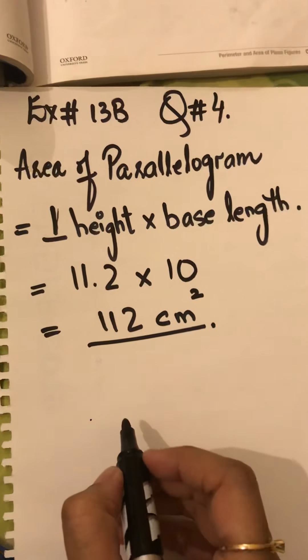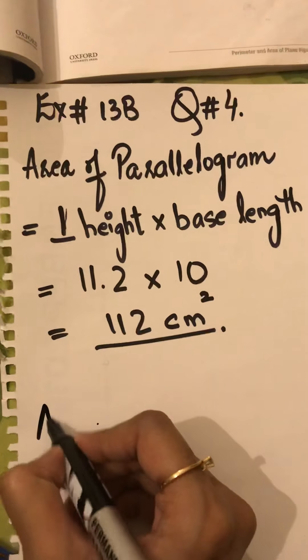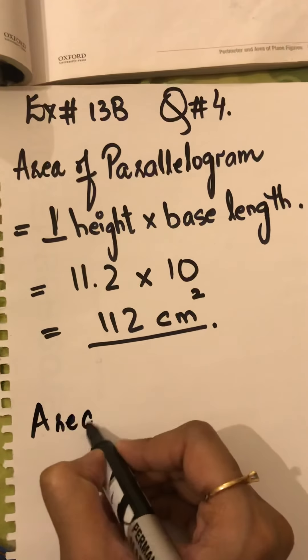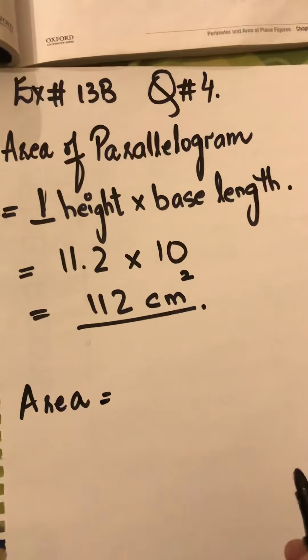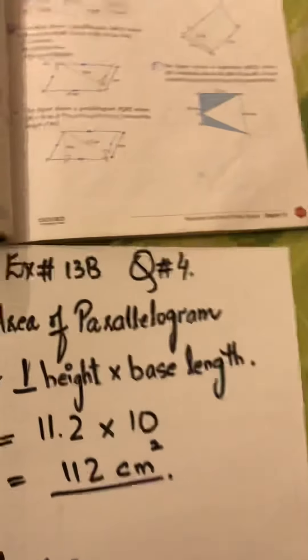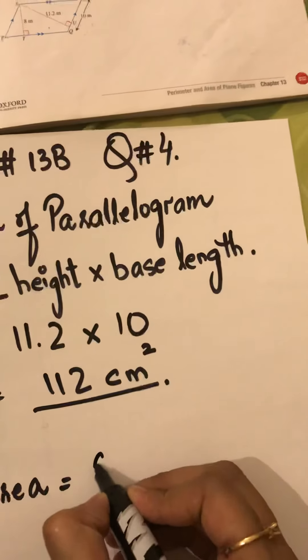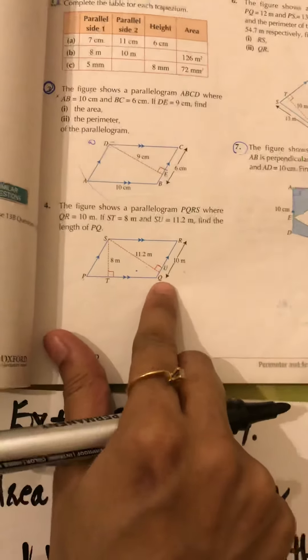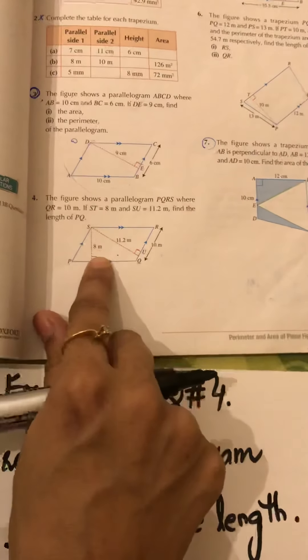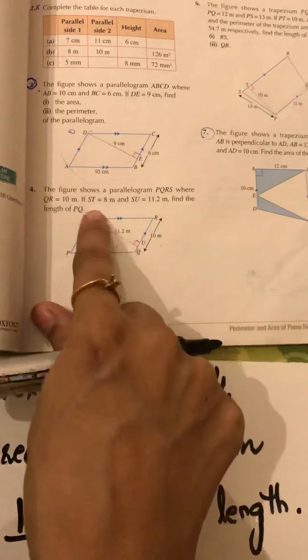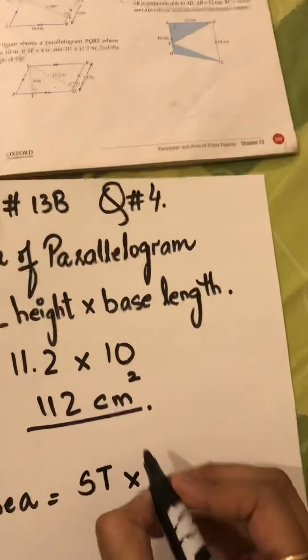Now what I'm going to do, I am going to write the formula again. Area is equals to now with some other dimensions, ST multiplied by PQ, because ST is the perpendicular height and PQ is the base length.